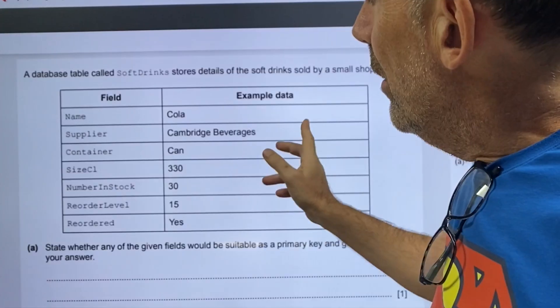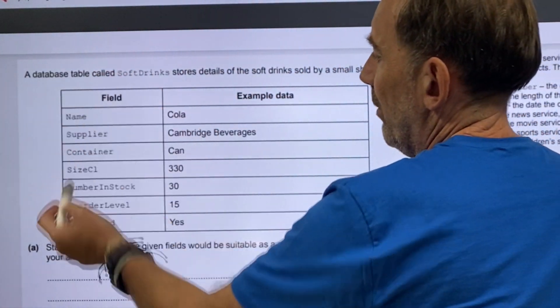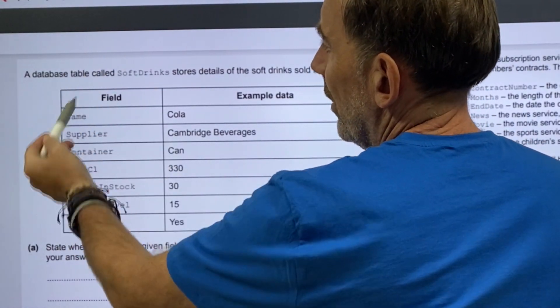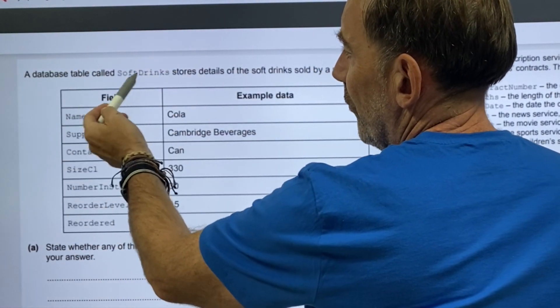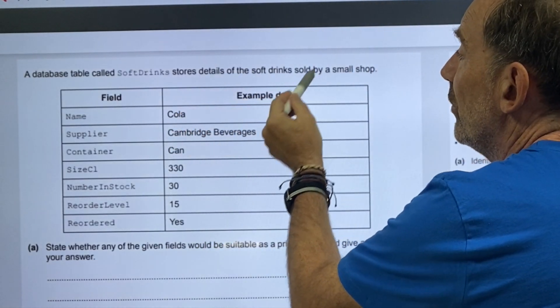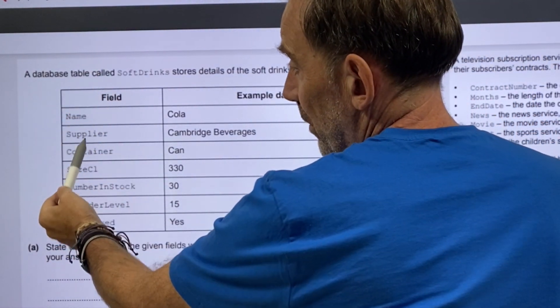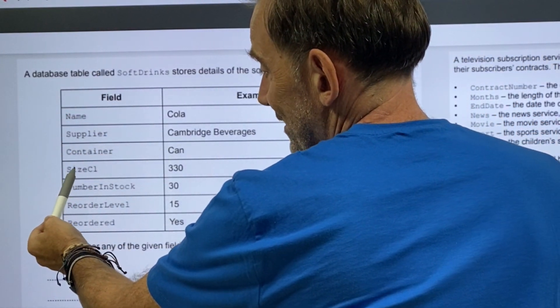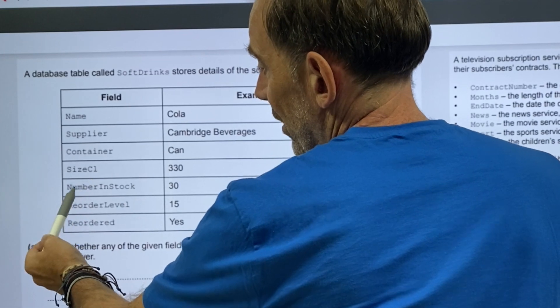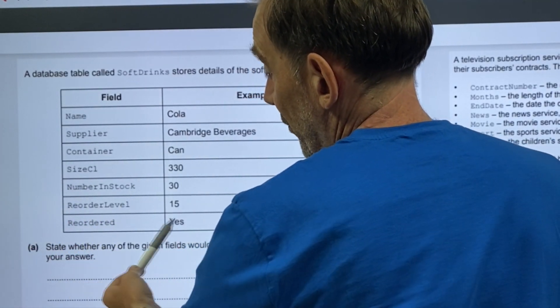First question. A database table called soft drinks stores details of the soft drinks sold by a small shop. Fields include name, supplier, container, size in centiliters, number in stock, reorder level, and reordered, whether it's a yes or no.